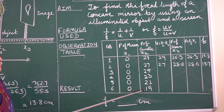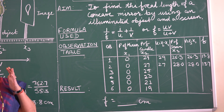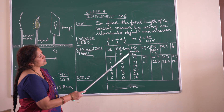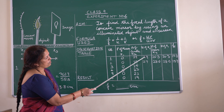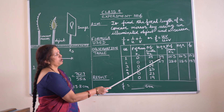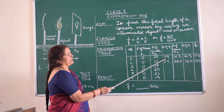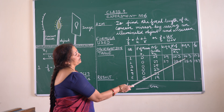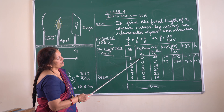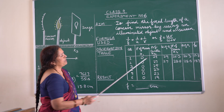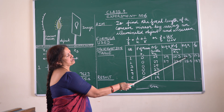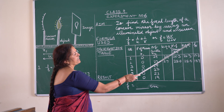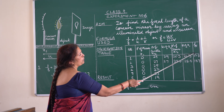These positions are based on when we get a clear and bright image on the screen. The distance between x2 and x1 is the object distance, so 29 minus 0 gives an object distance of 29 centimeters. If the image appears on the screen at position 26.3, then 26.3 minus 0 gives the image distance. Using the formula f = uv / (u + v), the focal length comes out to be 13.8 centimeters.